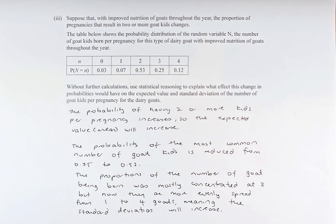So without further calculation, use statistical reasoning to explain what effect this change in probability would have on the expected value and the standard deviation of the goat kids per pregnancy for the dairy goat. So I got the answers directly from the marking schedule and I'm going to explain what it means.